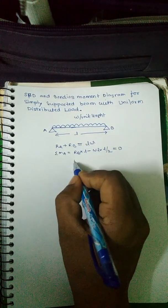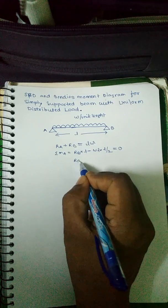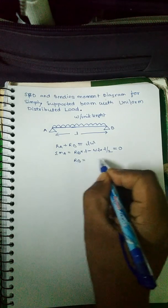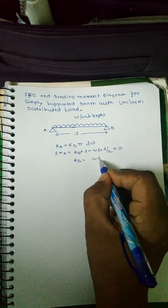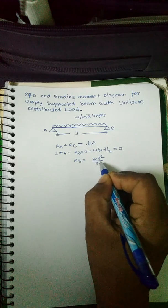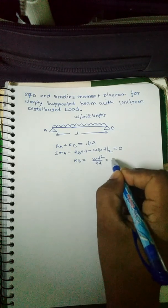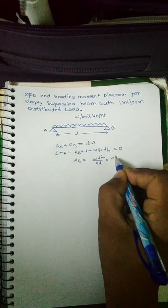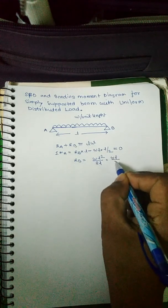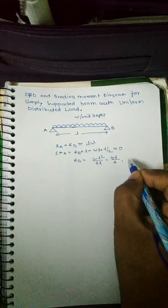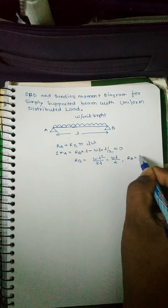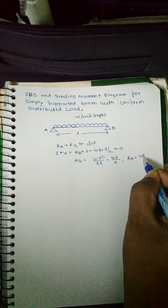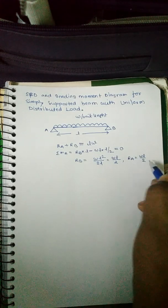So RB can be written as wL²/2L, which gives wL/2. Therefore RA can also be written as wL/2.